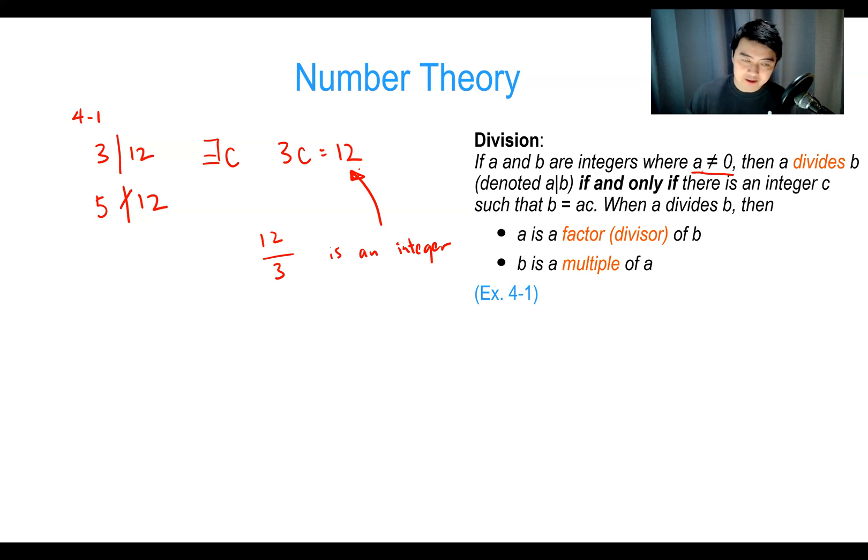For example, 13 is a prime number. If we ask what positive integers D divide 13, the answer is only D equals 1 and D equals 13. Since there are no others that fit this definition, by definition 13 is a prime number.